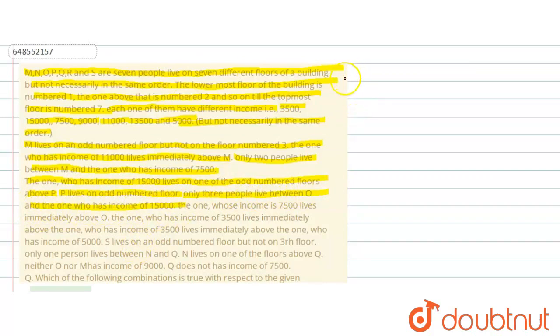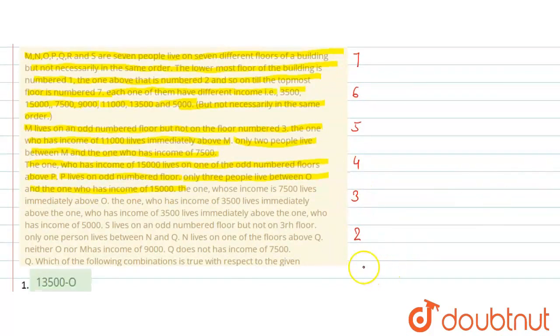So here we have seven floors. First we have topmost floor seventh, then six, then five, then four, three, two and bottommost floor is number one.